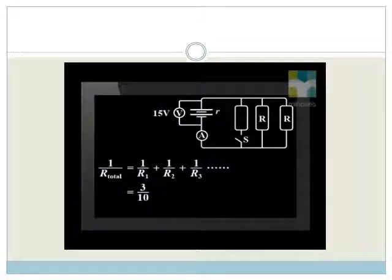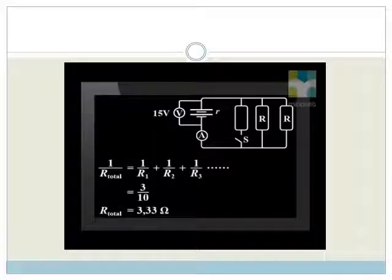Substitute 10 ohm for each resistor into our formula for parallel resistors and we find our new external R equals 3.33 ohm.